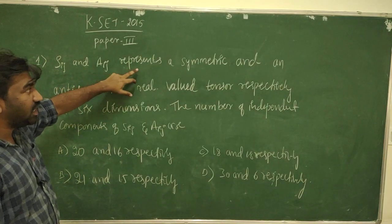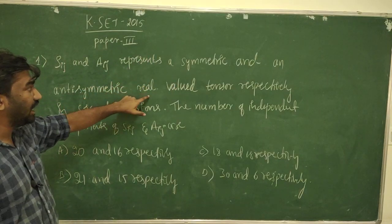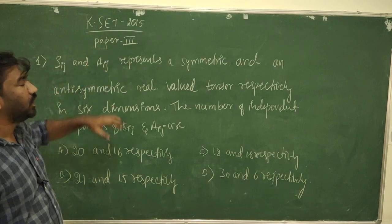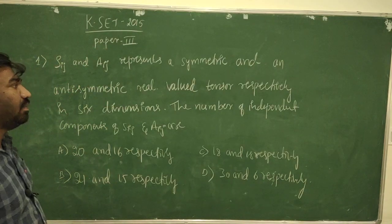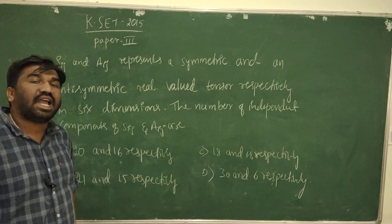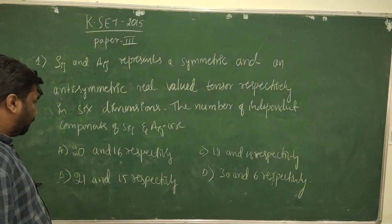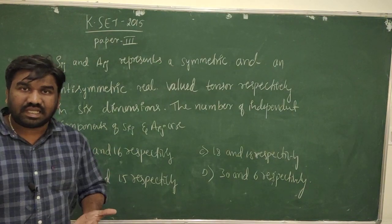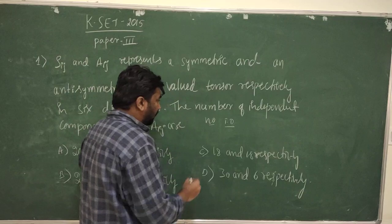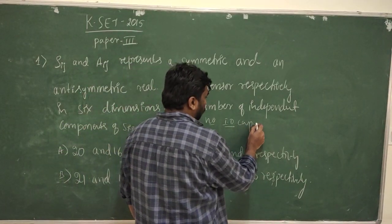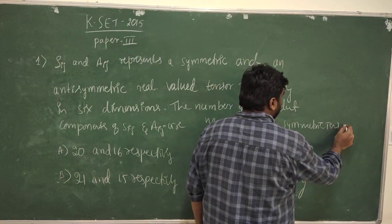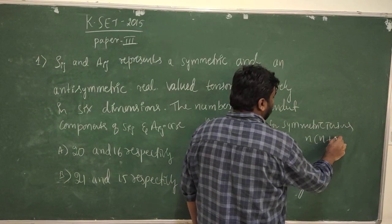Sij represents a symmetric and Aij represents an anti-symmetric real valid tensor respectively. For symmetric tensors, the number of independent components is given by the formula n(n+1)/2, where n is the dimension.